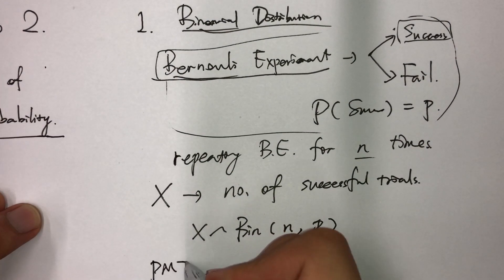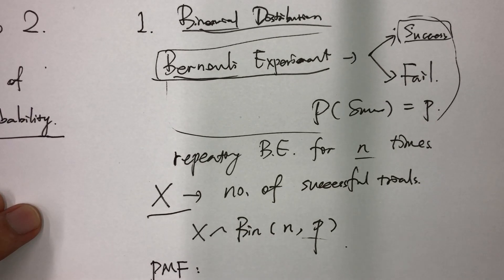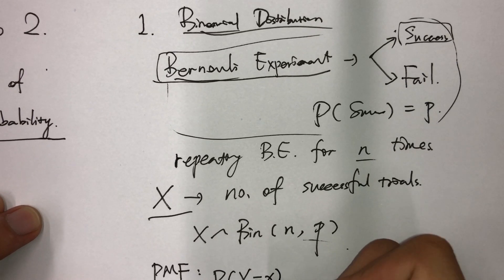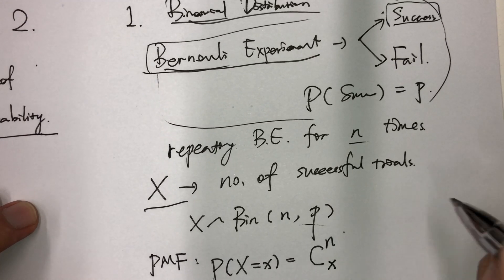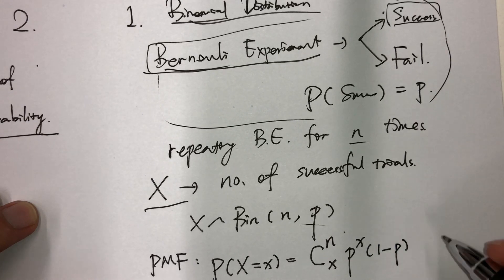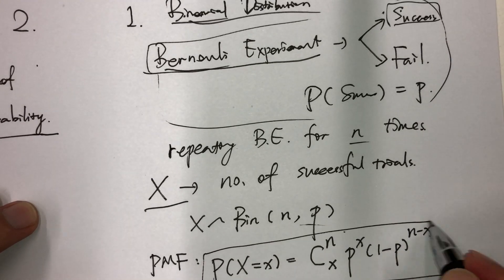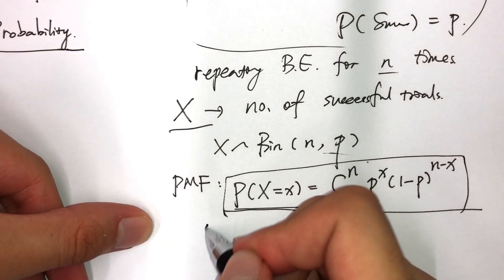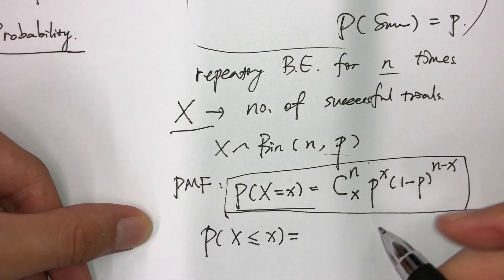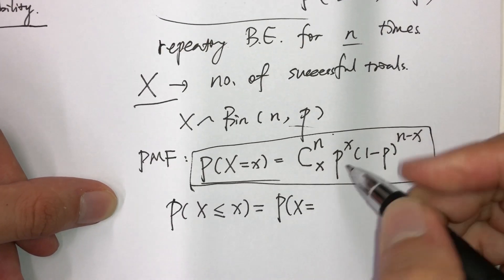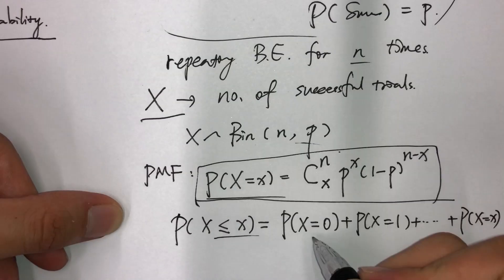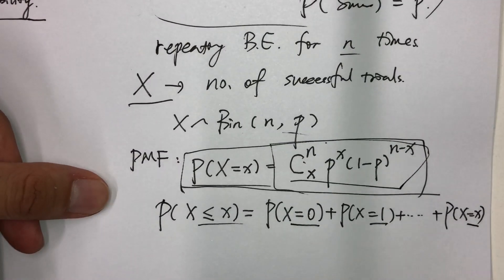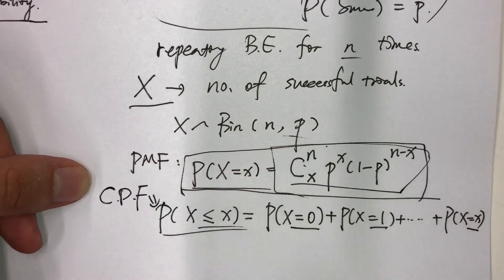The PMF, or probability mass function, for a binomial random variable is given by: the probability that X equals x is C(n, x) times p to the power of x times (1 minus p) to the power of (n minus x). This is the PMF used to calculate the exact probability. In terms of the cumulative distribution function, if we want the probability of X less than or equal to some value x, we add up all the probabilities from P(X=0), P(X=1), up to P(X=x), plugging each value into the PMF.